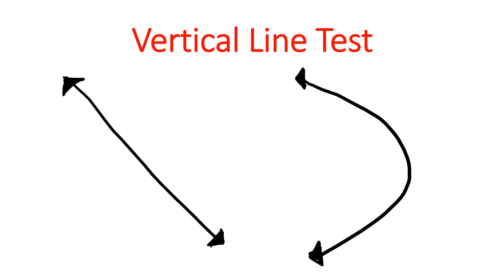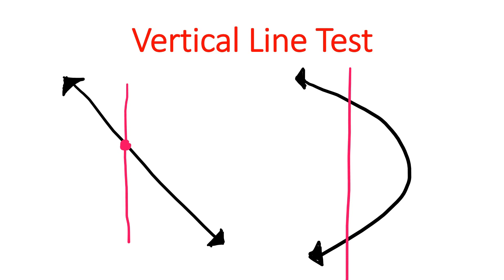Let's see. Suppose we have these two graphs. Let's take a look at the first graph. Let's draw a vertical line — it intersects the graph at exactly one point. Therefore, the first graph is a function. How about the second graph? When we draw a vertical line on the second graph, it intersects the graph at two points. Therefore, the second graph is not a function.